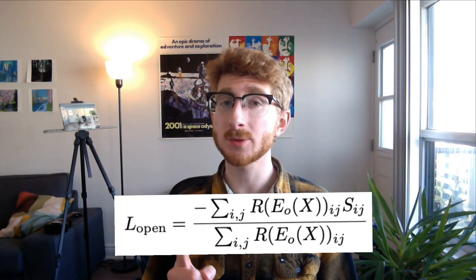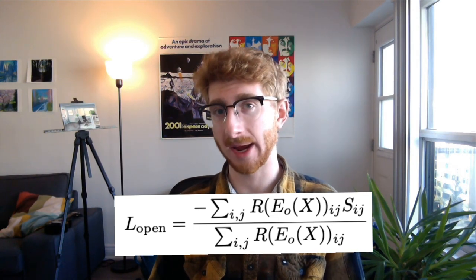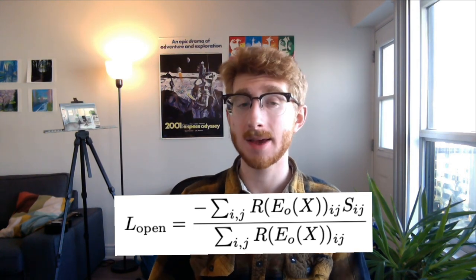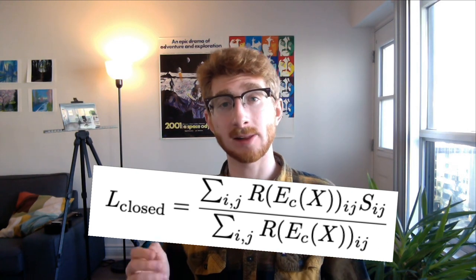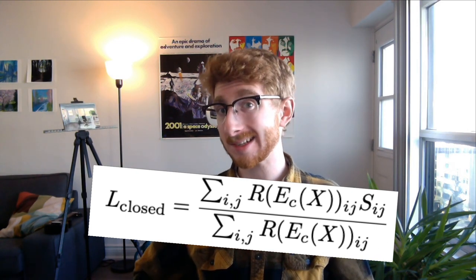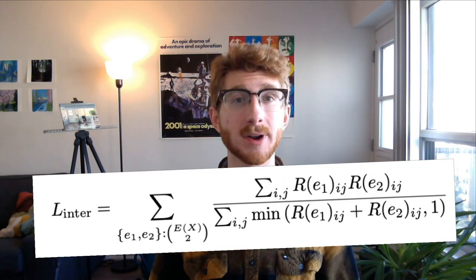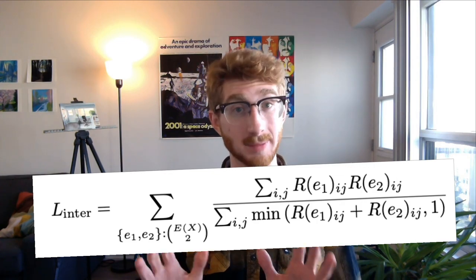From rule number three, we get three loss terms. The first one incentivizes the open ends of pants to intersect the silhouette. The second one incentivizes the closed ends of pants to not intersect the silhouette. And the third one disincentivizes any of the lines from intersecting each other.